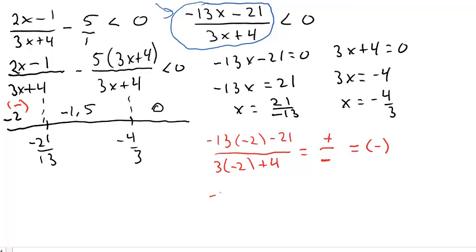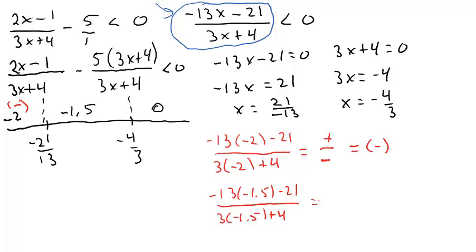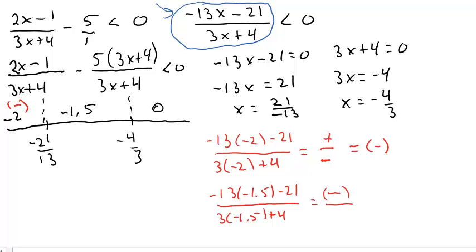Trying negative 1.5: negative 13 times negative 1.5 minus 21 over 3 times negative 1.5 plus 4. The numerator is 19.5 minus 21, which is negative. The denominator is negative 4.5 plus 4, also negative. Negative over negative is positive — so anything in this region is positive.